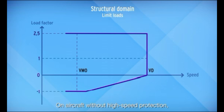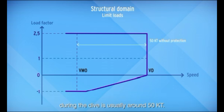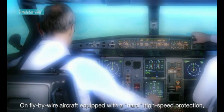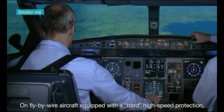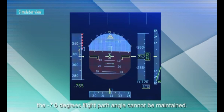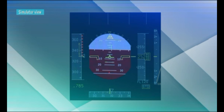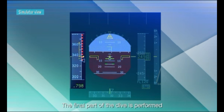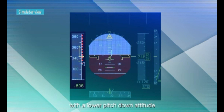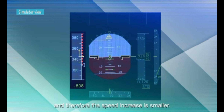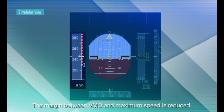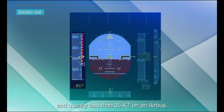On aircraft without high-speed protection, the difference between VMO and the maximum speed reached during the dive is usually around 50 knots. On fly-by-wire aircraft equipped with a hard high-speed protection, the minus 7.5 degrees flight path angle cannot be maintained. The final part of the dive is performed with a lower pitch-down attitude and therefore the speed increase is smaller. The margin between VMO and maximum speed is reduced and usually less than 35 knots on an Airbus.